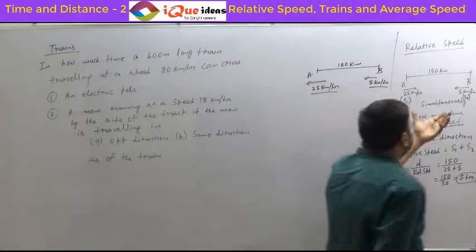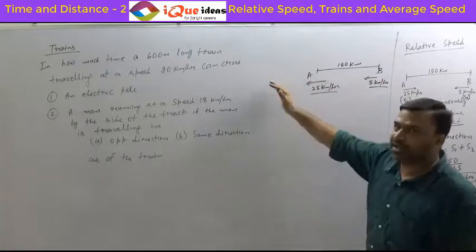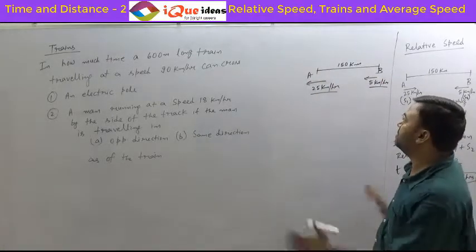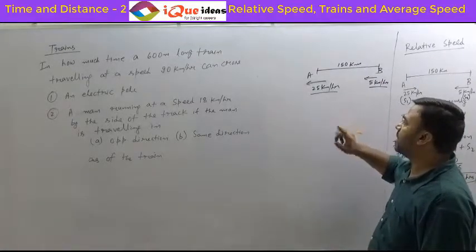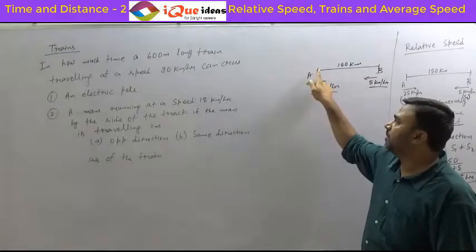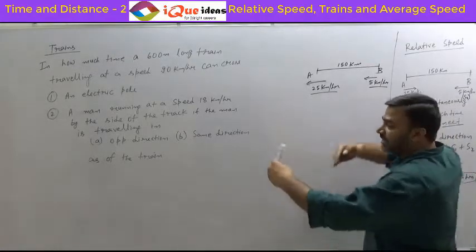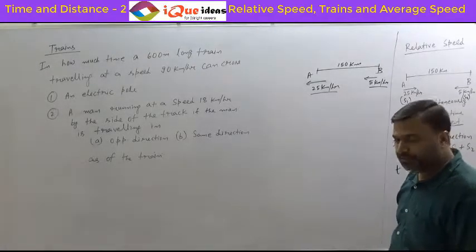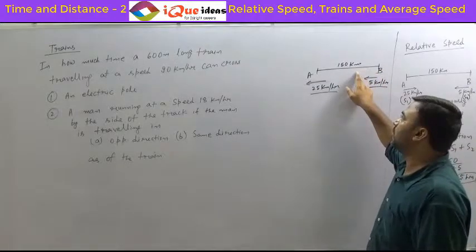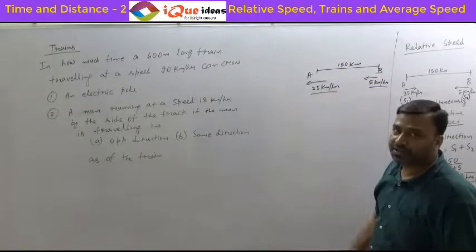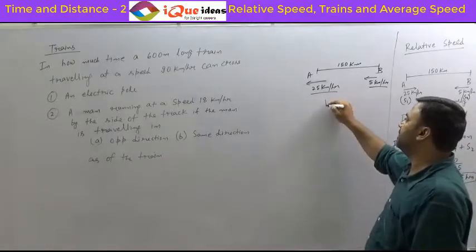Because, as you can see, we talked about the effective effort. Here, the faster person is going ahead and away. So his effort is not contributing to the agenda of meeting. To meet, their distance should be reduced. After one hour, this person would have gone 25 km ahead, whereas this person would have travelled only 5 km. So effectively the distance between them has increased by 20 km. So the meeting is not possible here — no meeting.